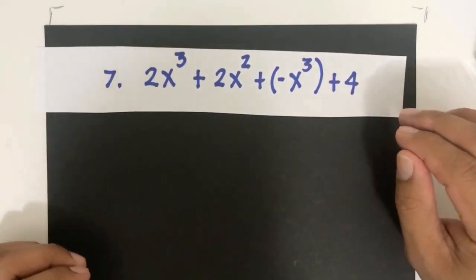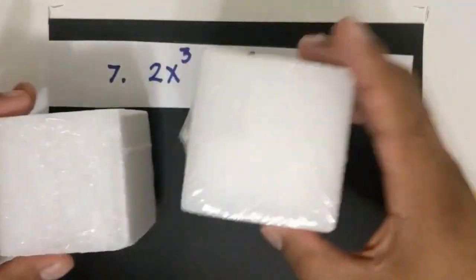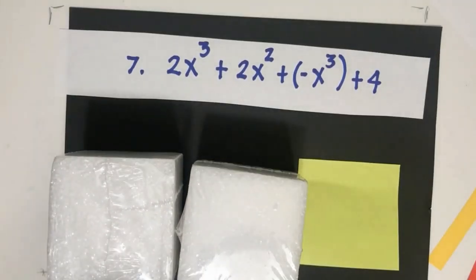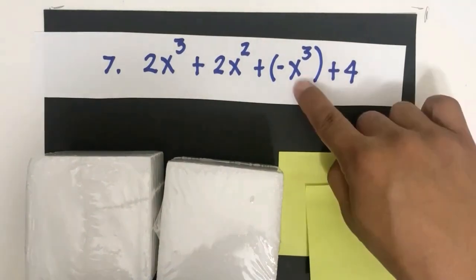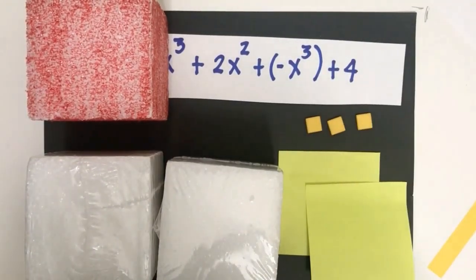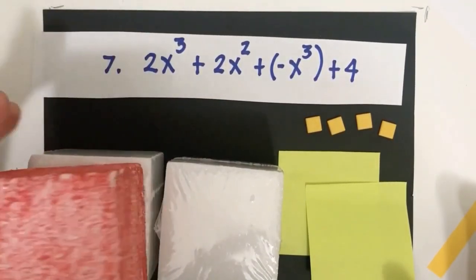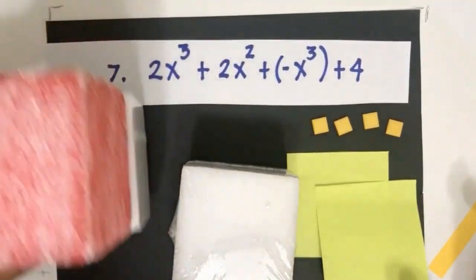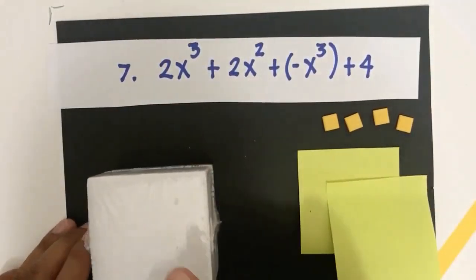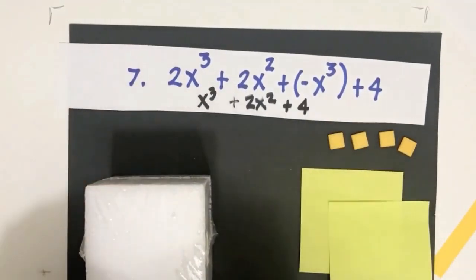For 2x cubed plus 2x squared minus x cubed plus 4: we represent 2 positive x cubes, 2 x squared tiles, 1 negative x cube (red), and 4 positive units. When we simplify, the negative x cubed and one positive x cubed form a zero pair and are removed. What remains is x cubed, 2x squared, and 4.